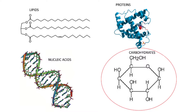There are four different kinds of macromolecules: lipids, proteins, nucleic acids, and carbohydrates. Today we will be talking about what a carbohydrate is.